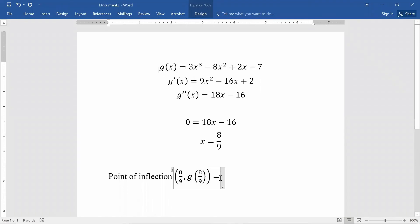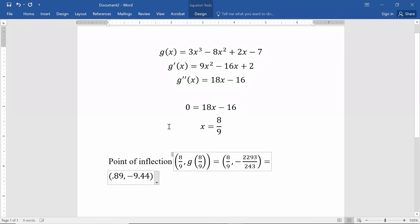If you did that, you'd get a really ugly number. I ended up getting negative 2293 over 243, which if you round to a couple of decimal places, 8 9ths is 0.89 and negative 2293 over 243 is negative 9.44. So there you are. We have the point of inflection there. That's where this function changes from concave up to concave down, or from concave down to concave up.